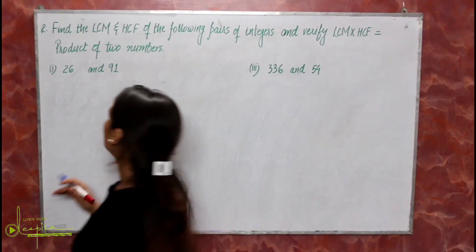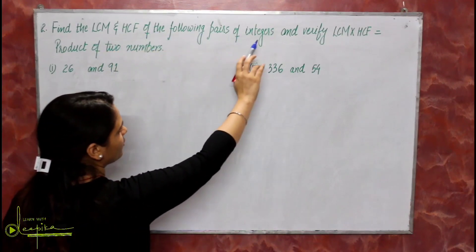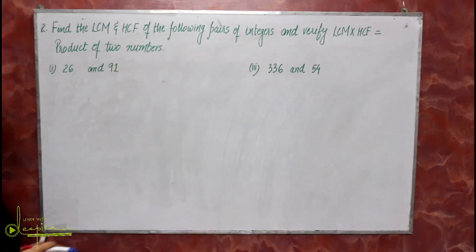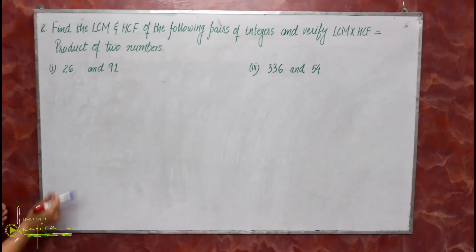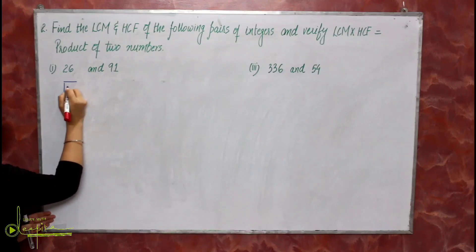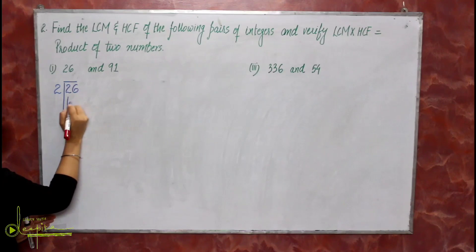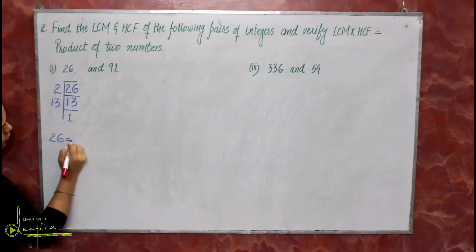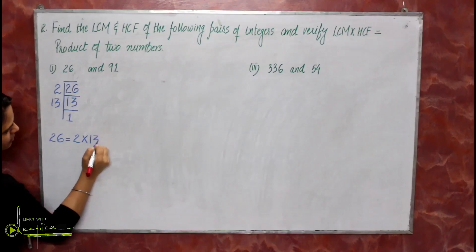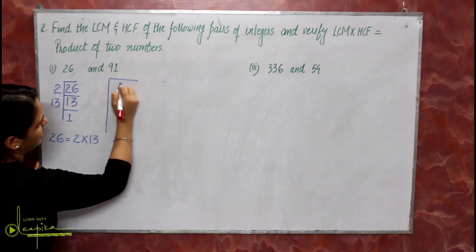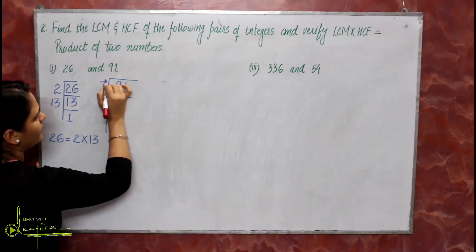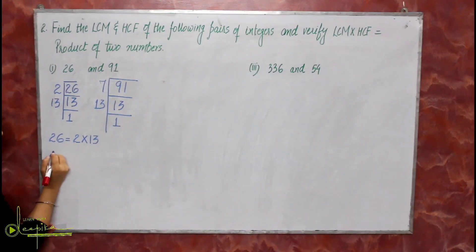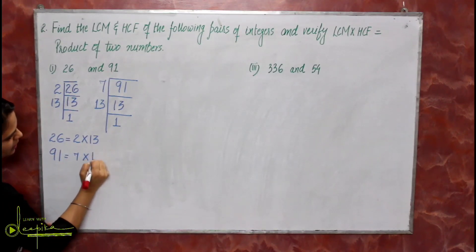Question number 2: find the LCM and HCF of the following pairs of integers and verify that LCM × HCF equals the product of the two numbers. First pair is 26 and 91. Prime factorization of 26: 2 × 13. Prime factorization of 91: 7 × 13.